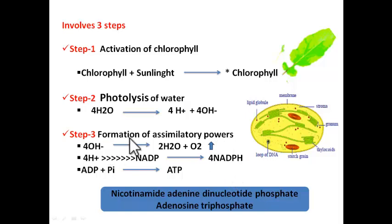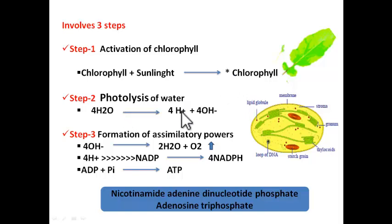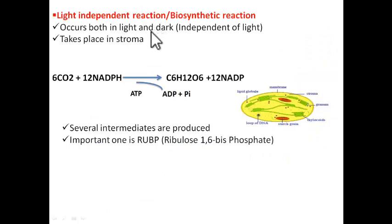This step is called formation of assimilatory powers. To summarize the light dependent reaction: first, chlorophyll gets excited; then it gets de-excited, liberating energy; that energy is trapped by water; water splits; and assimilatory powers NADPH and ATP are produced. Now, the light independent reaction takes place in the stroma. It is light independent because it does not require light — it can take place both during daytime and nighttime.